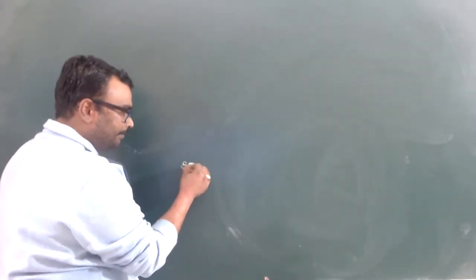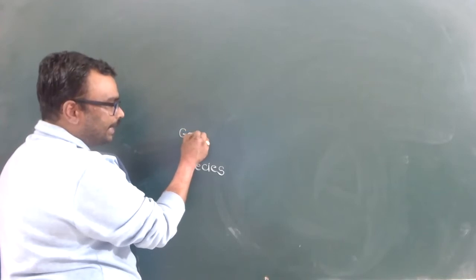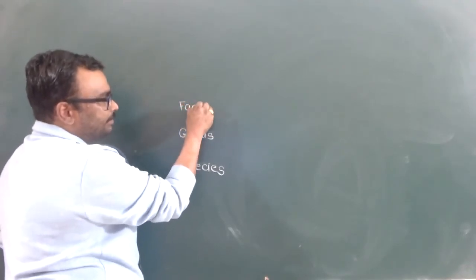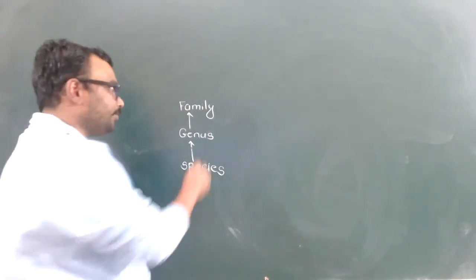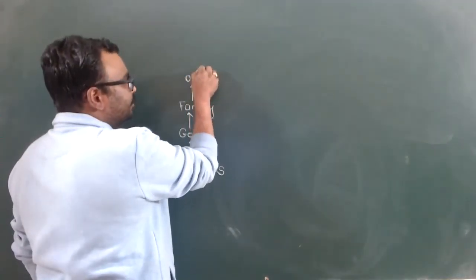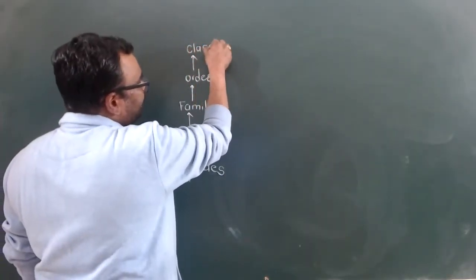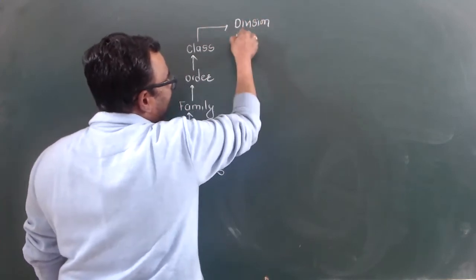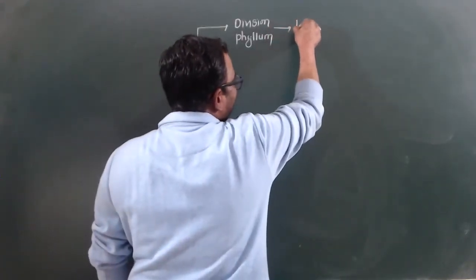There are obligate (compulsory) categories and optional (facultative) categories. In the downward direction, the basic unit of classification is species. Similar species are grouped into a genus; similar genera form a family; similar families form an order; similar orders form a class; and ultimately all classes are grouped into a kingdom.